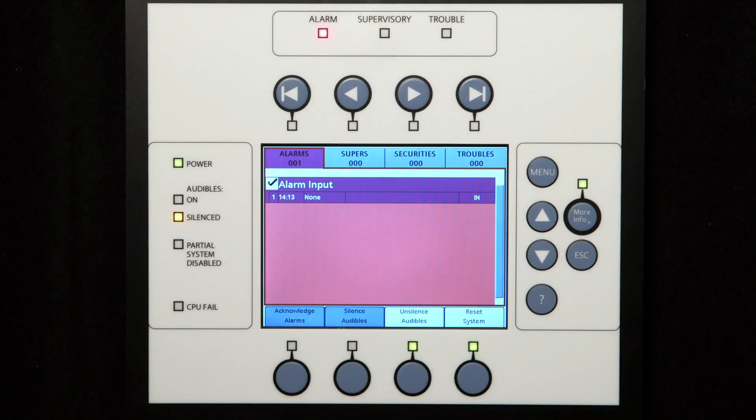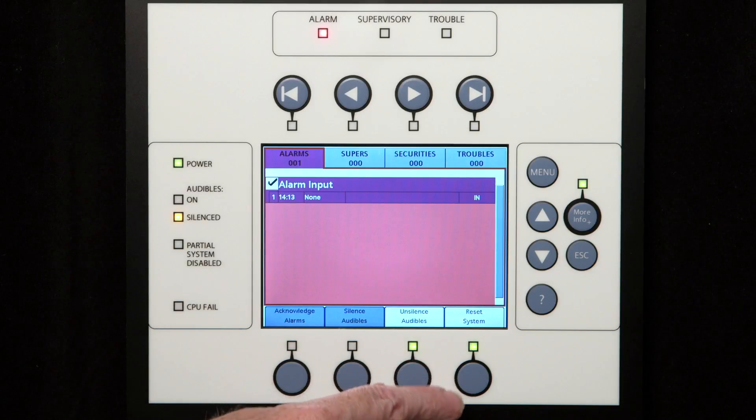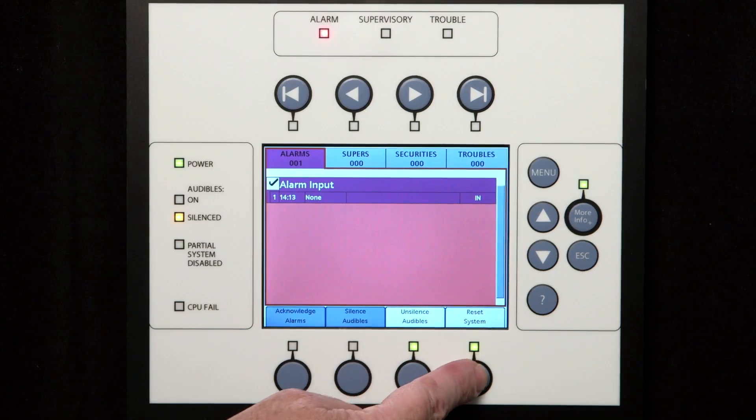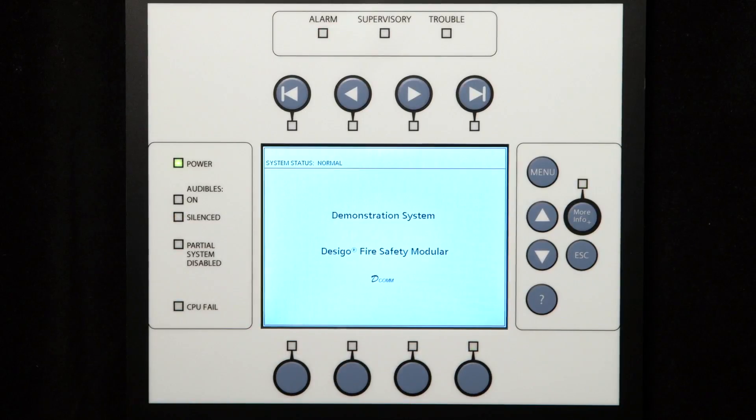Lastly, once the event has been acknowledged and the audible silenced, the system needs to be reset. When in this state, the button on the lower right side of the display is now set for system reset, and the display is updated and the adjacent LED is illuminated. Once reset, the fire panel returns to the normal standby operation. This too should only be done when authorized.